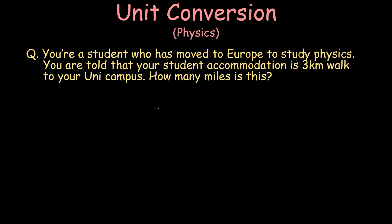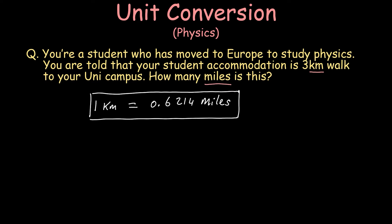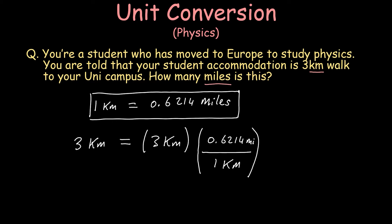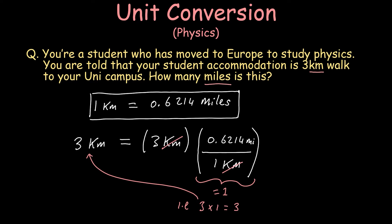Getting back to our original question, we need to find the conversion factor of kilometers into miles. We first write 3 kilometers on the left-hand side of the equal sign. Because the conversion factor equals unity, we can multiply it by 3 kilometers without changing anything. Because units can be treated as algebraic quantities, the kilometer unit can be cancelled out, leaving us with only units of miles — 3 times 0.6214 miles.